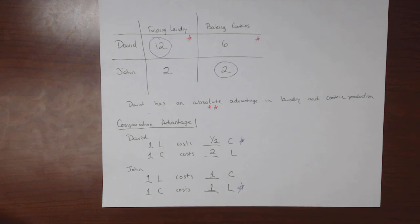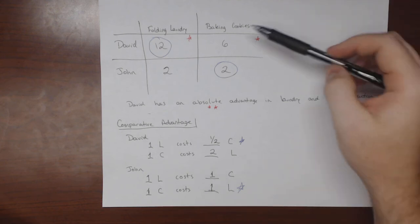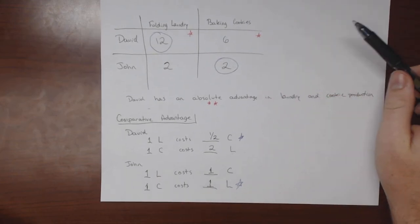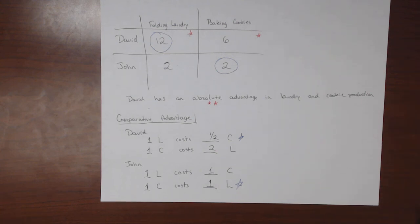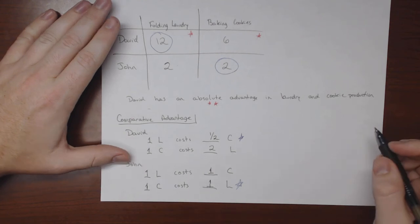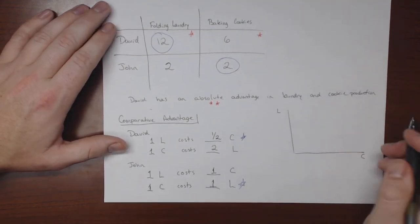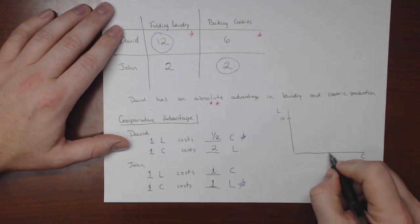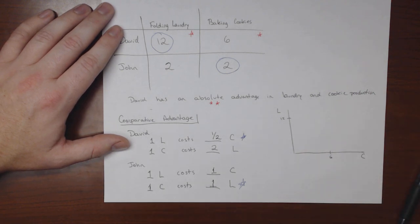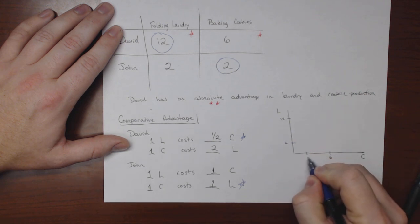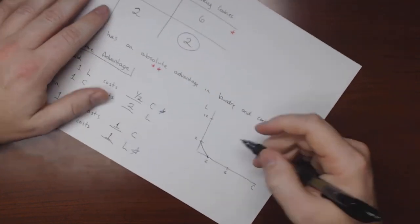So even though I have an absolute advantage in baking cookies, my brother has a comparative advantage in baking cookies — he is relatively better at baking cookies than I am because he gives up fewer loads of laundry than I do per batch. If we wanted to produce the most folded laundry and cookies in our household, we would want me to fold all the laundry and John to bake all the cookies — and that way we'd have the most cookies and laundry done.